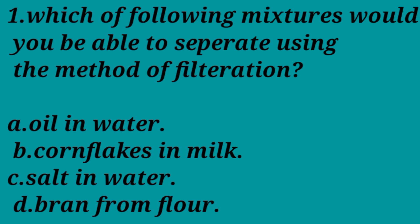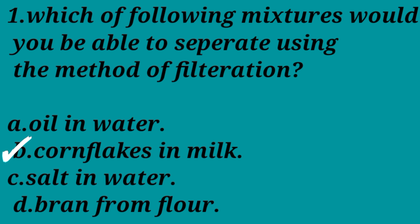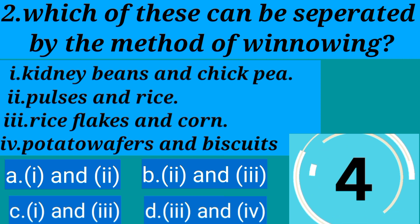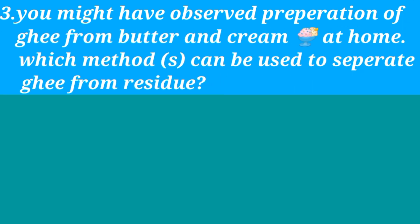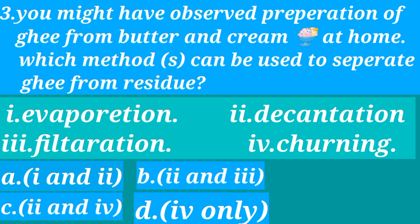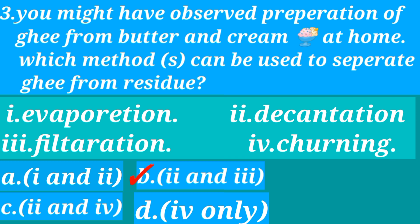Multiple choice questions: Which of the following mixtures can you separate using filtration? A. Oil in water, B. Cornflakes in milk, C. Salt in water, D. Bran from flour. Answer: B, cornflakes in milk. Which can be separated by winnowing? A. Kidney beans and chickpea, B. Pulses and rice, C. Rice flakes and cornflakes, D. Potato wafers and biscuits. You might have observed preparation of ghee from butter and cream at home. Which method can be used to separate ghee from residue? 1. Evaporation, 2. Decantation, 3. Filtration, 4. Churning. Answer: B, Decantation.